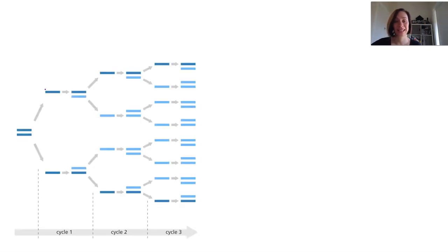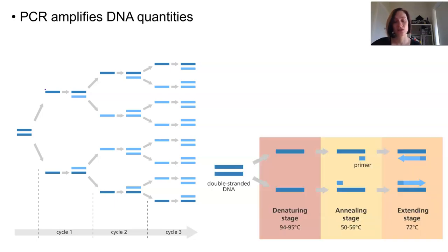For techniques used in forensics or extraction of DNA from fossils, tiny quantities of DNA need to be amplified and reproduced many, many times to be properly studied. PCR is a tool that is used to amplify DNA quantities.